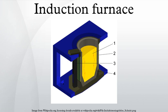An induction furnace is an electrical furnace in which the heat is applied by induction heating of metal. Induction furnace capacities range from less than 1 kg to 100 tons capacity and are used to melt iron and steel, copper, aluminum and precious metals.